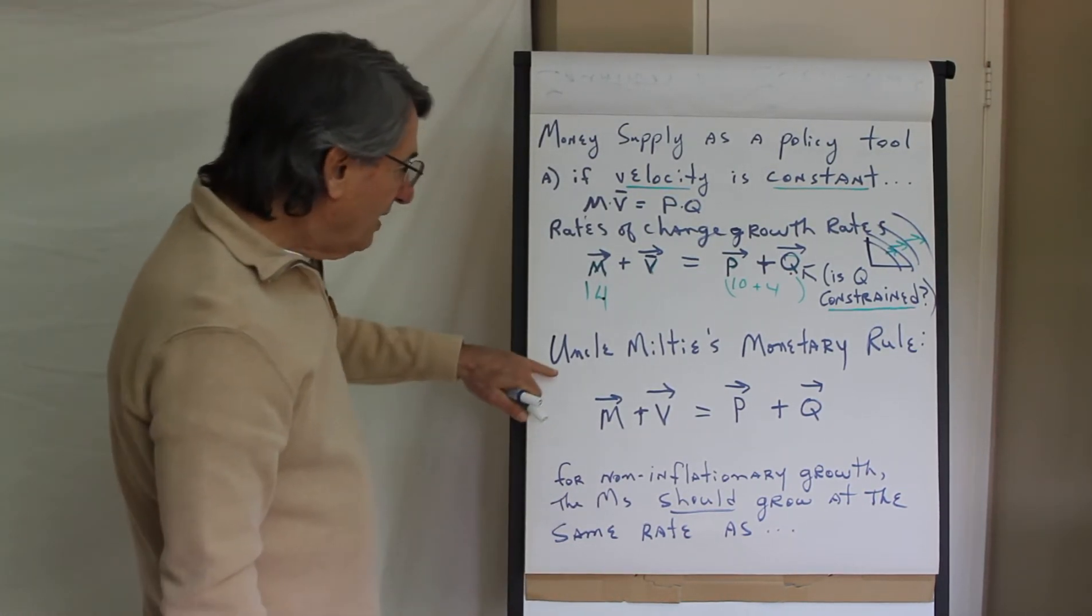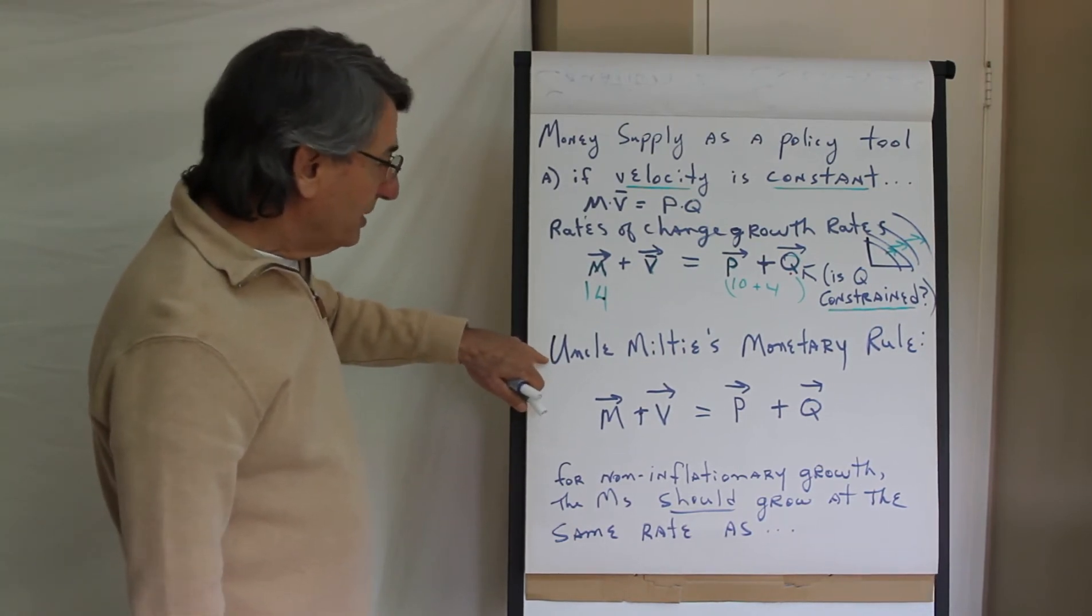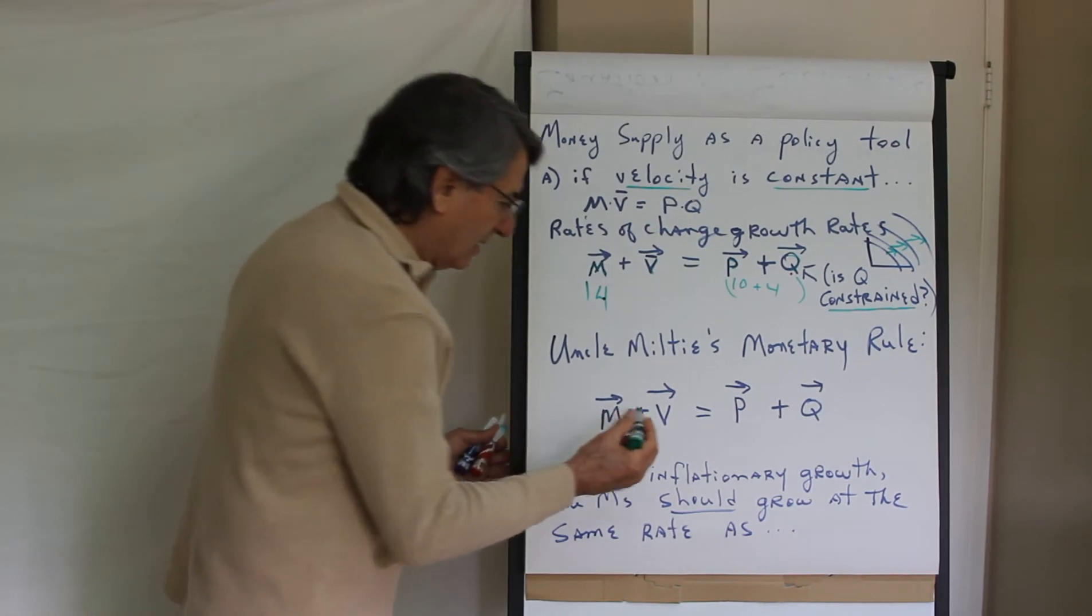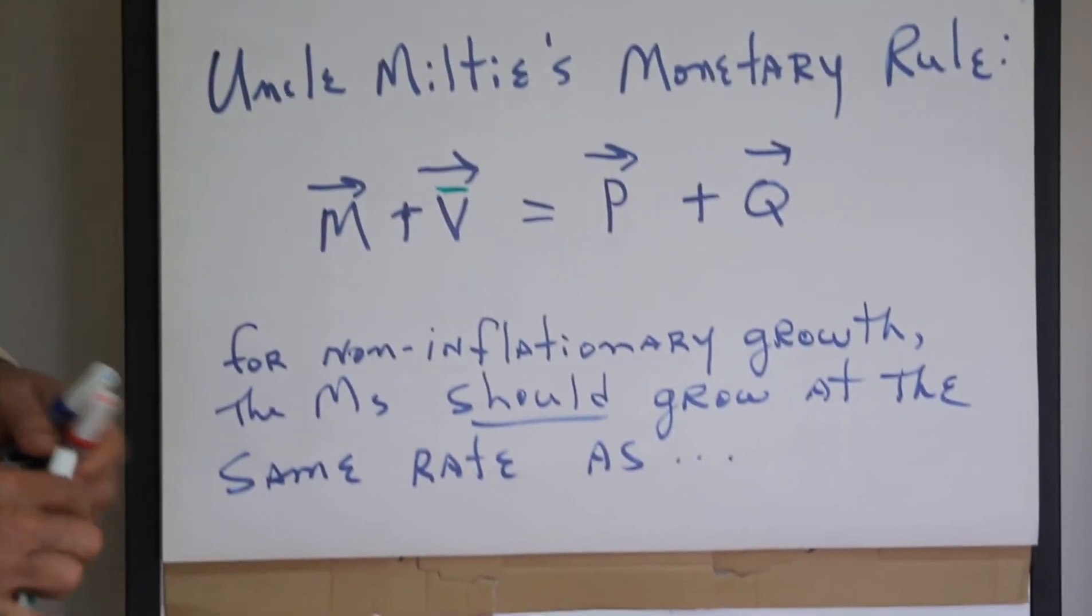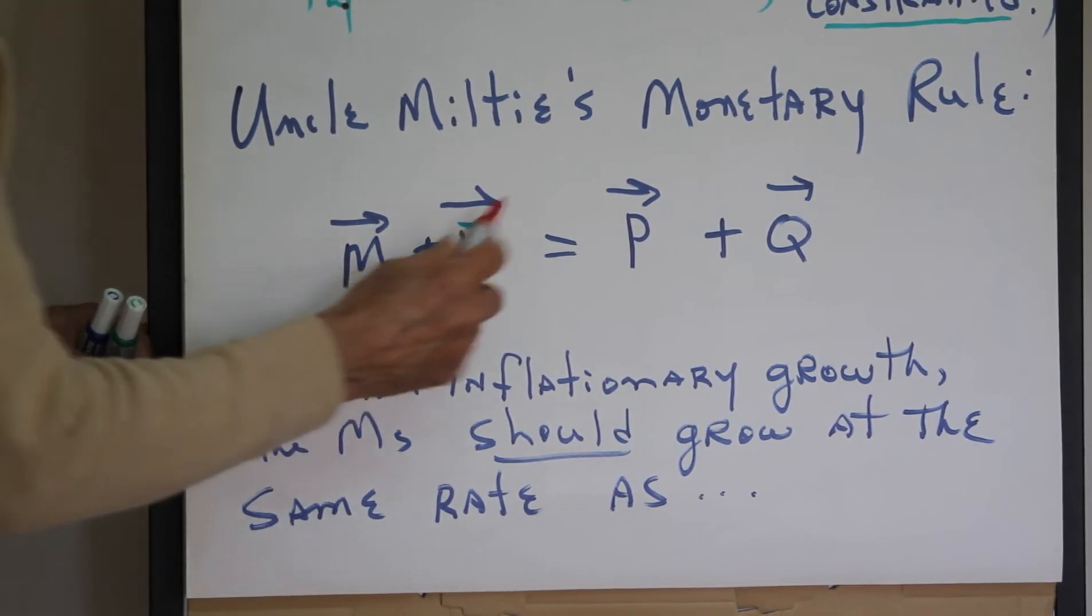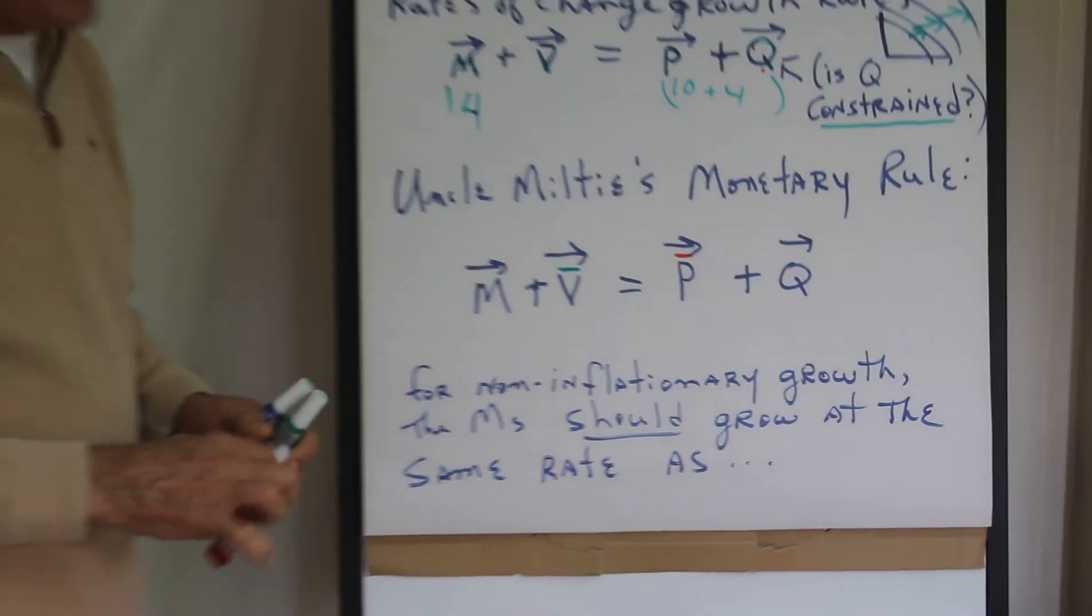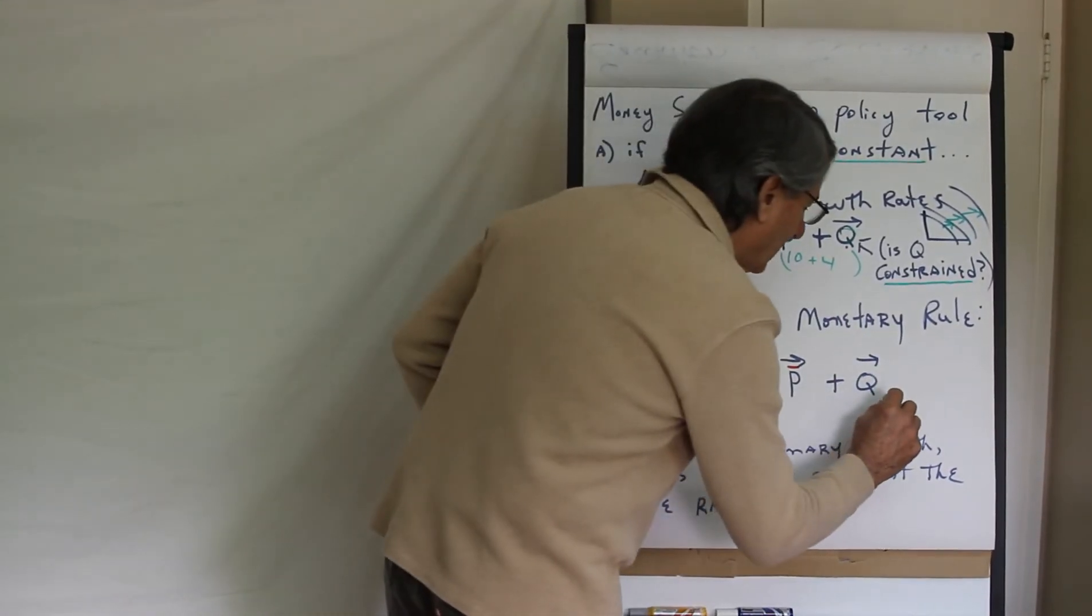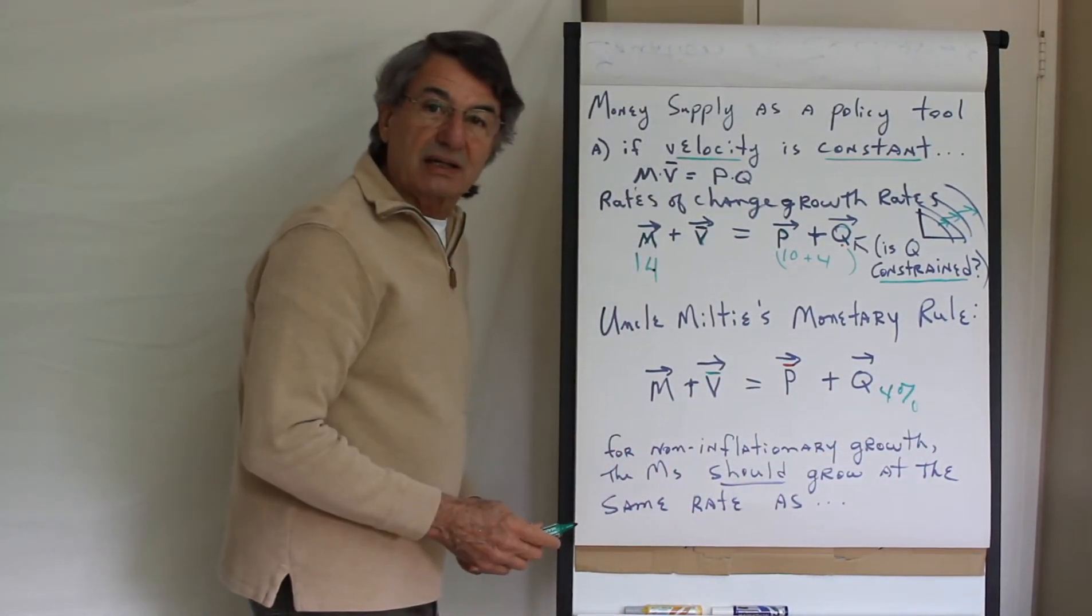This is Uncle Miltie, Friedman of course. To use Uncle Miltie's monetary rule, he basically assumed that for policy purposes and over the long run, velocity was relatively constant and that you could treat it as a constant for policy purposes. If it was your desire to have no growth in prices, that is not have inflation, then Uncle Miltie said that if quantity is constrained to grow at 4% per year, then what should the money supply grow at?